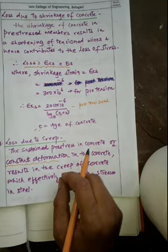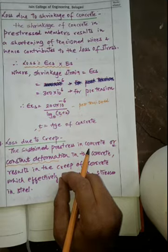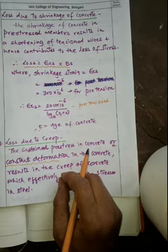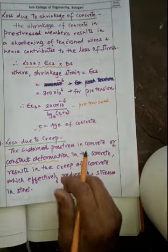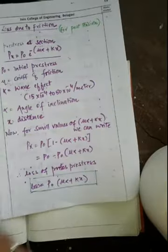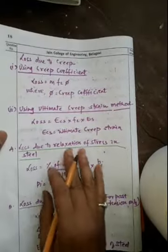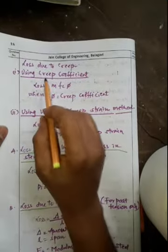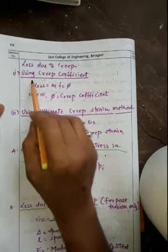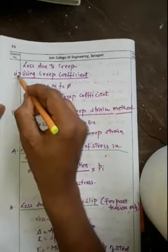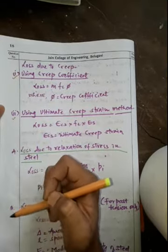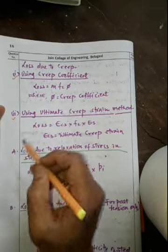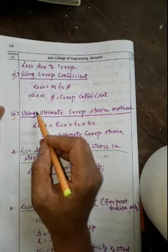There is a constant deformation in the concrete, and that deformation will ultimately affect the stress developed by the tendons, resulting in loss due to creep. There are two methods for calculating this loss: using the creep coefficient method and using the ultimate creep strain method.